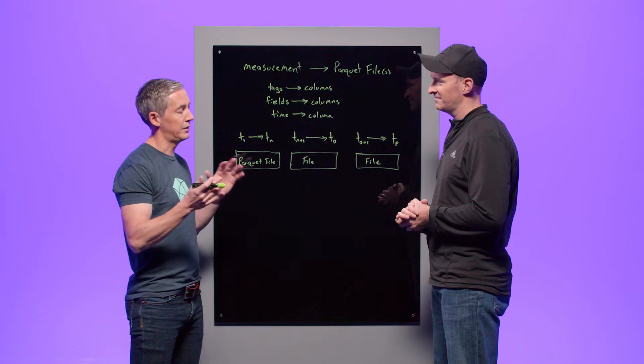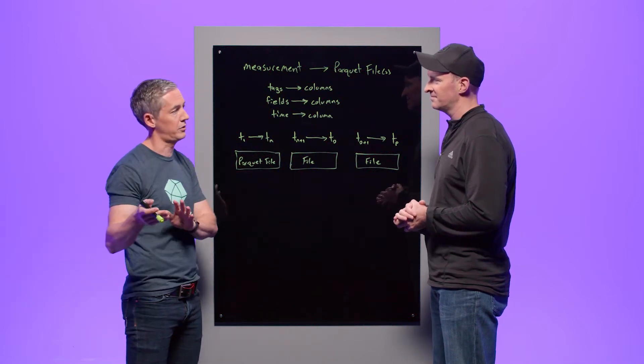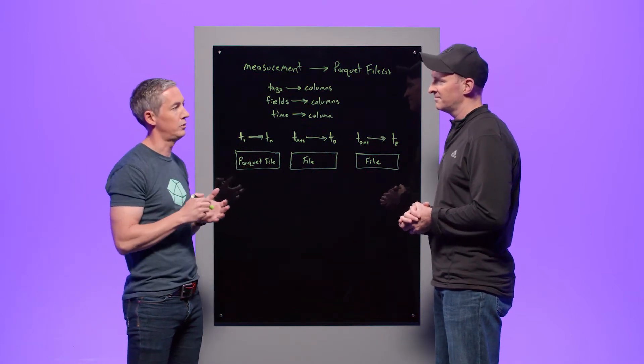It's a columnar data file format. It supports different encoding and compression schemes to optimize it for dealing with data in bulk. It also supports encoding compression on a per column basis, which means individual columns can be compressed, optimizing the amount of storage that you use.